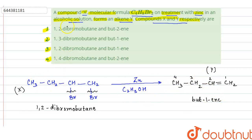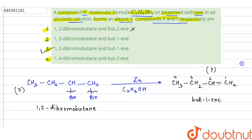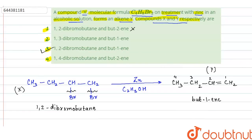Looking at the options: option 1 gives 1,2-dibromobutane and but-2-ene — this is wrong because we are getting but-1-ene. Option 2 has 1,3-dibromobutane and but-1-ene — we will check this. Option 3 gives 1,2-dibromobutane and but-1-ene — this is correct; this can be compound X and Y.